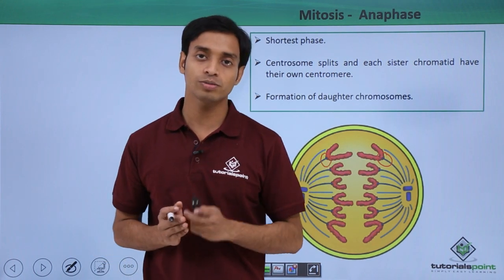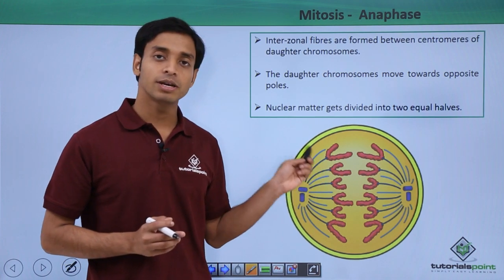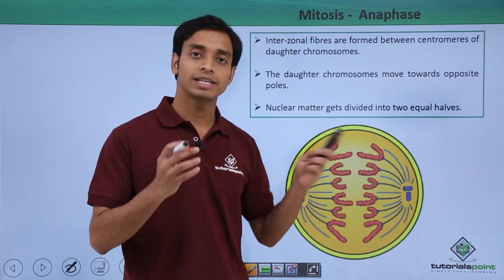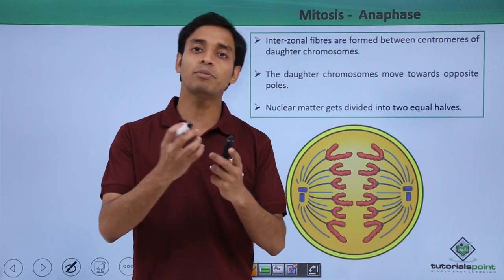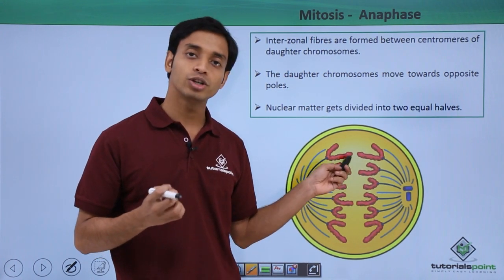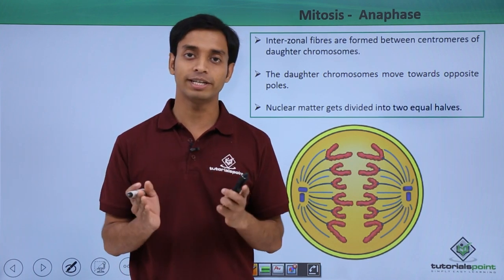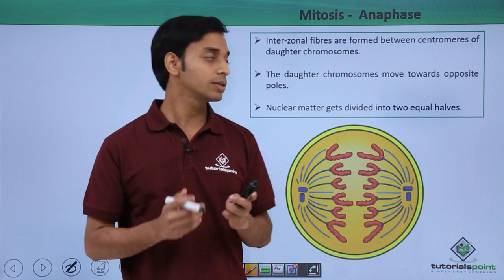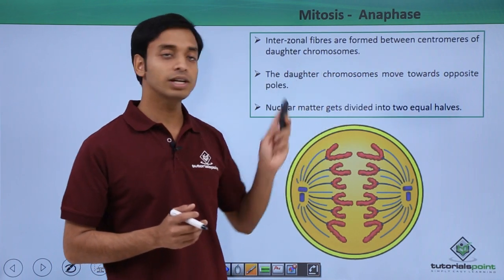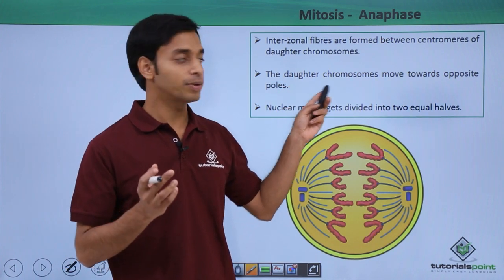This splitting happens because the microtubules coming from the asters start depolymerizing, pulling the chromosomes towards the poles. Because of this, the centromeres get split into halves. Intrazonal fibers are formed between the centromeres of the daughter chromosomes.